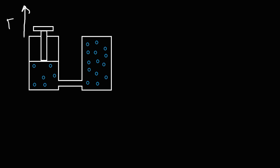Now we have the situation represented by the diagram on the board, where the pressure in both containers is about the same. What's going to happen if we lift up the piston — if we pull it up? This is referred to as upstroke. According to Boyle's Law, if we increase the volume and expand the gas, the pressure is going to decrease. The pressure always decreases whenever a gas expands.